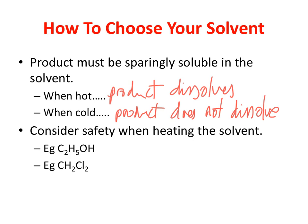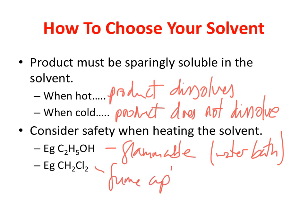We also need to consider safety matters when heating the solvent. This substance here is ethanol. So, you don't want to be heating ethanol over a Bunsen flame because it's flammable. So, you'll need to use a water bath to heat it and taking the water from a kettle, maybe. This substance here is dichloromethane. Now, that's a toxic substance. You don't want to be heating dichloromethane in the laboratory. Certainly in the open laboratory. So, you might want to use a fume cupboard if the solvent is toxic.